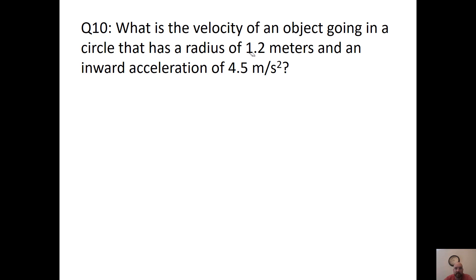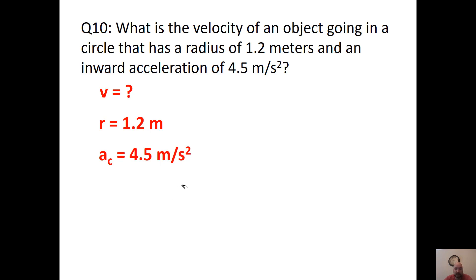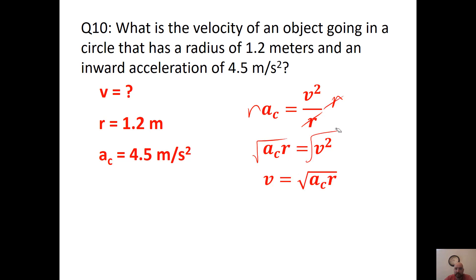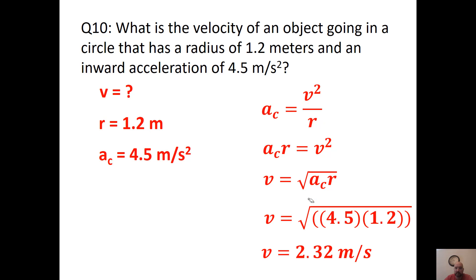What's the velocity of an object going in a circle with a radius of 1.2 meters and an inward acceleration of 2.5 m/s²? We have centripetal acceleration and radius but need to solve for v. Rearrange the equation: multiply both sides by r, then take the square root of both sides. Plugging in the values — don't forget the square root — you get 2.32 meters per second.